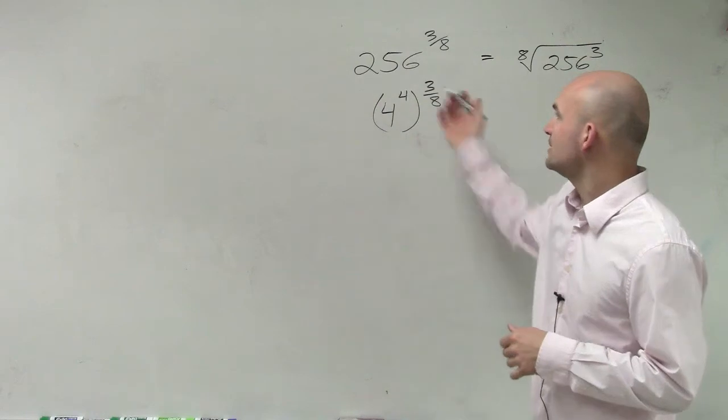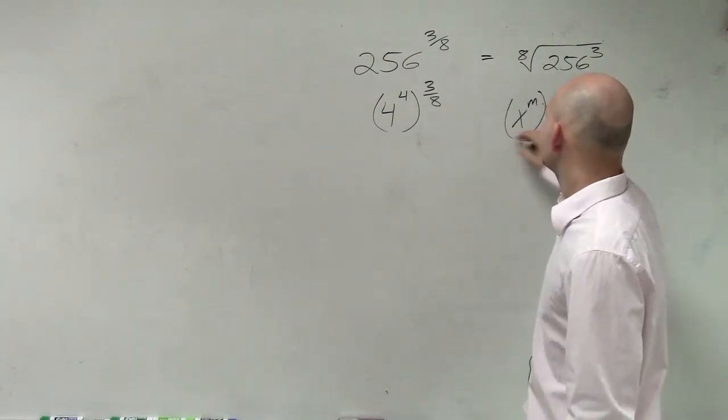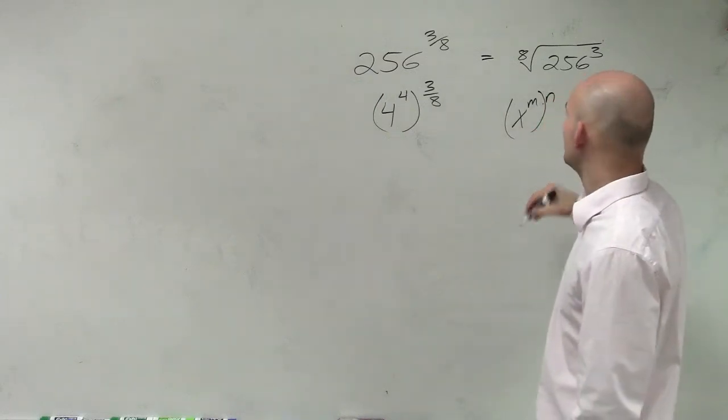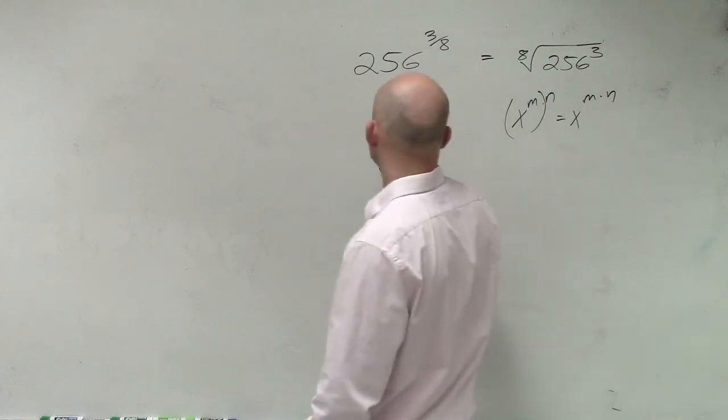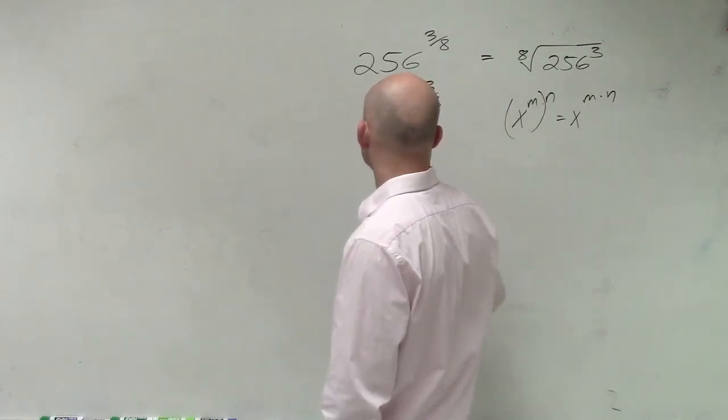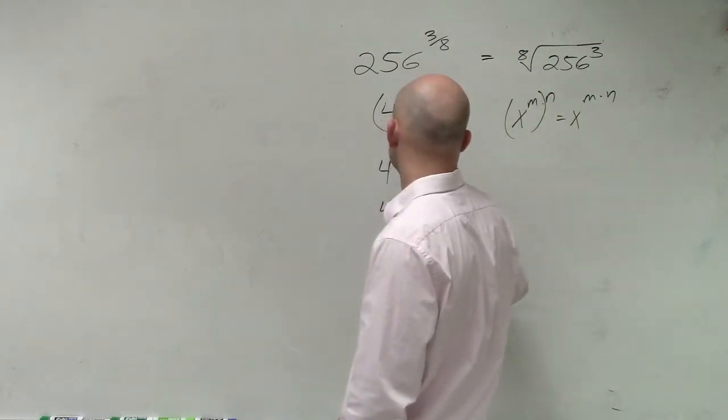Then we can now simplify this, because remember when you have a variable raised to an exponent raised to another exponent, you're going to multiply. So therefore, this becomes 4 to the 12 over 8, which equals 4 to the 3 halves.